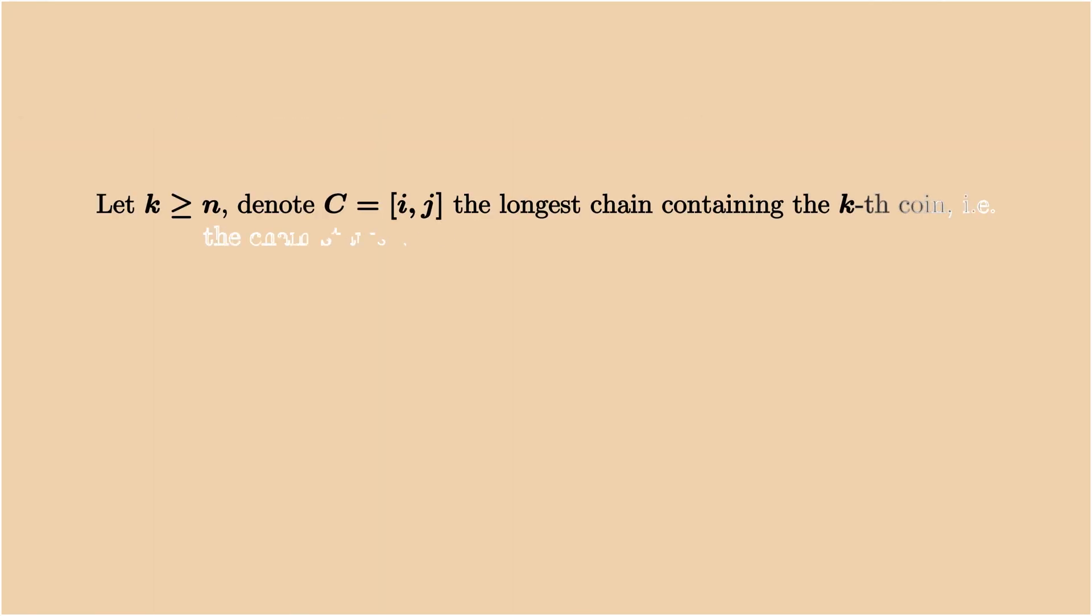Next, let me introduce a notation where I use the closed interval [i, j] to denote the longest chain containing the kth coin. In other words, the chain starts with the ith coin and ends at the jth coin, and all the coins in between have the same type.